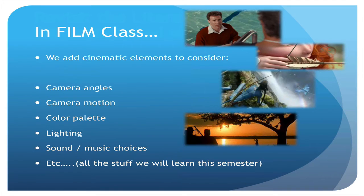Now, since this is a film class, we get to add another layer of elements. Not only do we have the literary elements where film has things in common with literature, but we get to add the cinematic elements — things that are unique to film. We get to look at camera angles, camera motion, color palette, lighting, and sound.